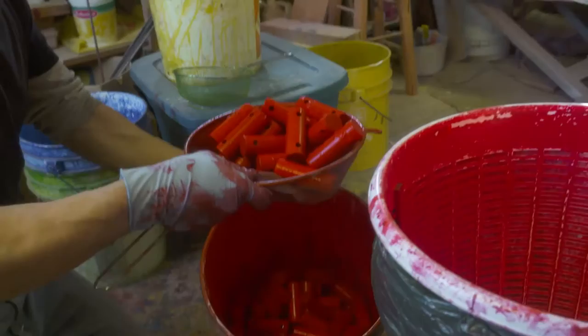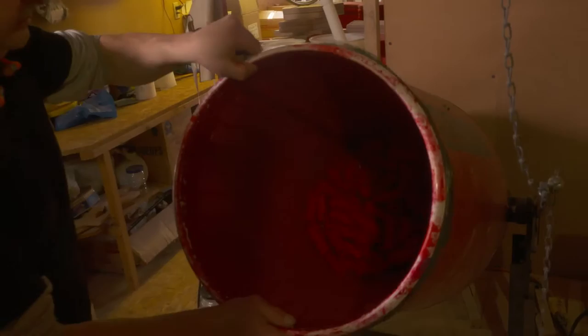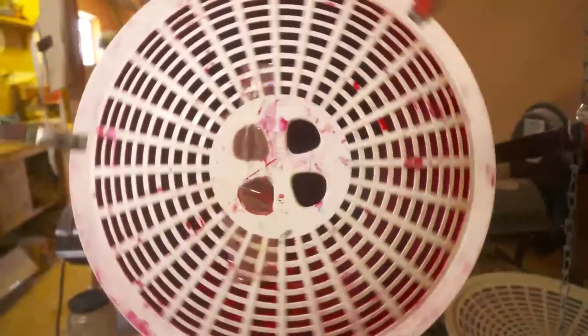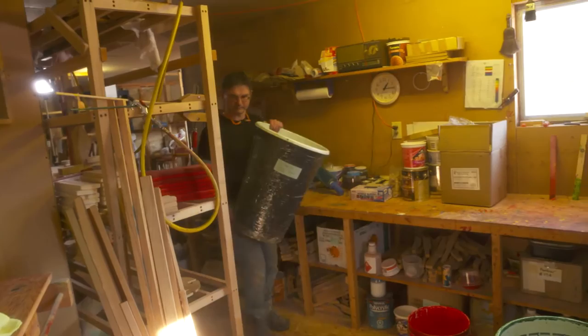Once coated, they are removed and head over to the tumbler. The basket is placed in the tumbler and the lid is secured. The pieces are rotated in the tumbler to ensure an even coating of stain. They need to tumble for one hour, then are removed and set to dry in racks overnight.